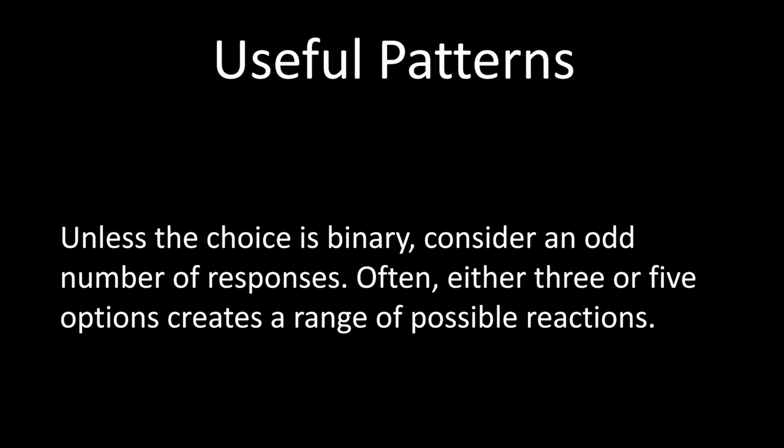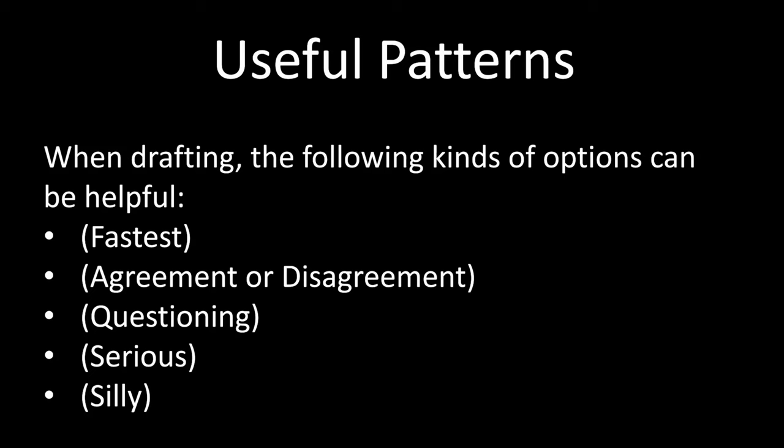As we're thinking about different types of options, let's look at a general template. This is not a hard and fast rule, but it can help people who are first getting started think through the kinds of responses that might appear as part of interactive dialogue. These include, as previously discussed, generally the fastest — the first or the default option. Then agreement or disagreement. Generally there will be some part of the audience who wants things to move a little faster, so putting the options of agreement or disagreement towards the top might speed up that interaction for them.